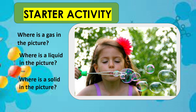Now let's answer: where is a liquid in the picture? The basic ingredients for making bubbles are water, liquid detergent, and glycerin. These three ingredients — water, liquid detergent, and glycerin — are all liquid. Water by itself has a high surface tension, and plain water bubbles are small and quick to burst.